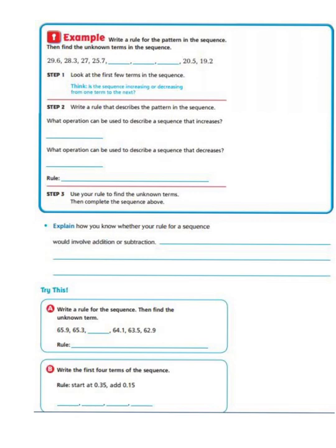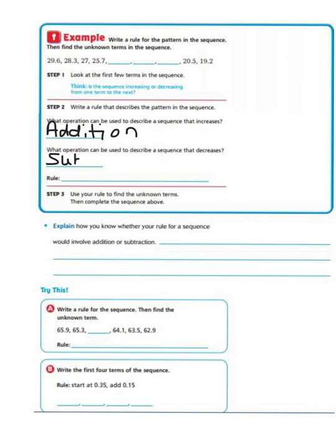We have to think: is the sequence increasing or decreasing from one term to the next? We see 29, 28, 27 — so we know it is decreasing. Step two says to write a rule that describes the pattern. If the pattern is going up, the operation would be addition. Since this sequence is decreasing, we are going to use subtraction in our rule.